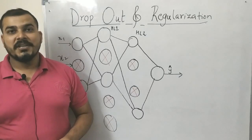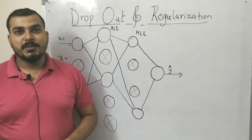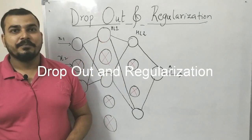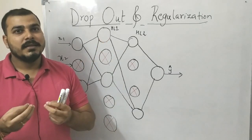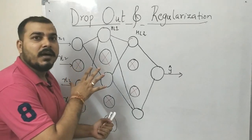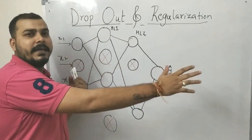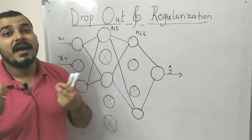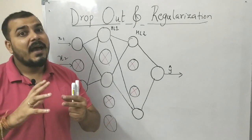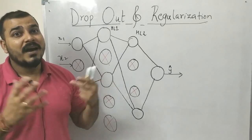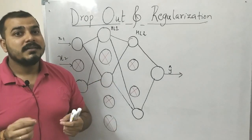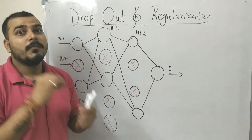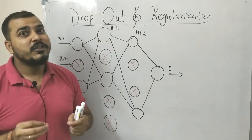Hello all, my name is Krish Nayak and welcome to my YouTube channel. Today we are basically going to discuss about dropout and regularization. Whenever we have an artificial neural network which is very deep, we will be having many weights and many bias parameters, and when we have a huge amount of weight and bias parameters, the neural network tends to overfit the dataset.